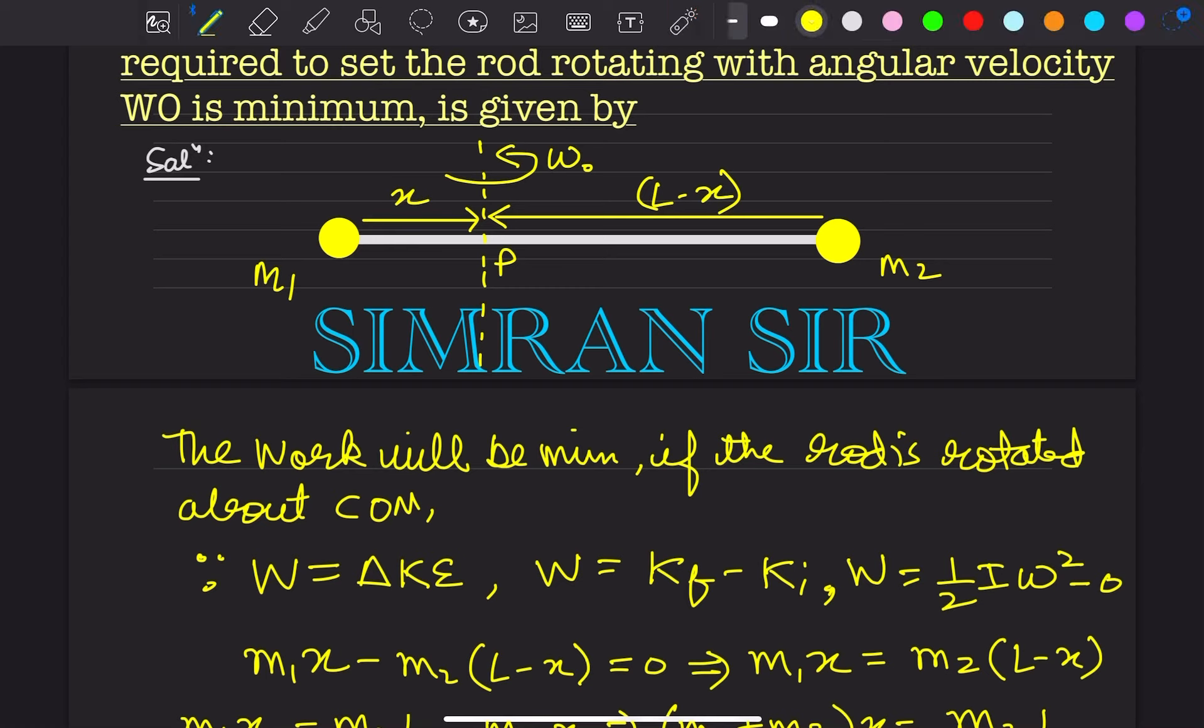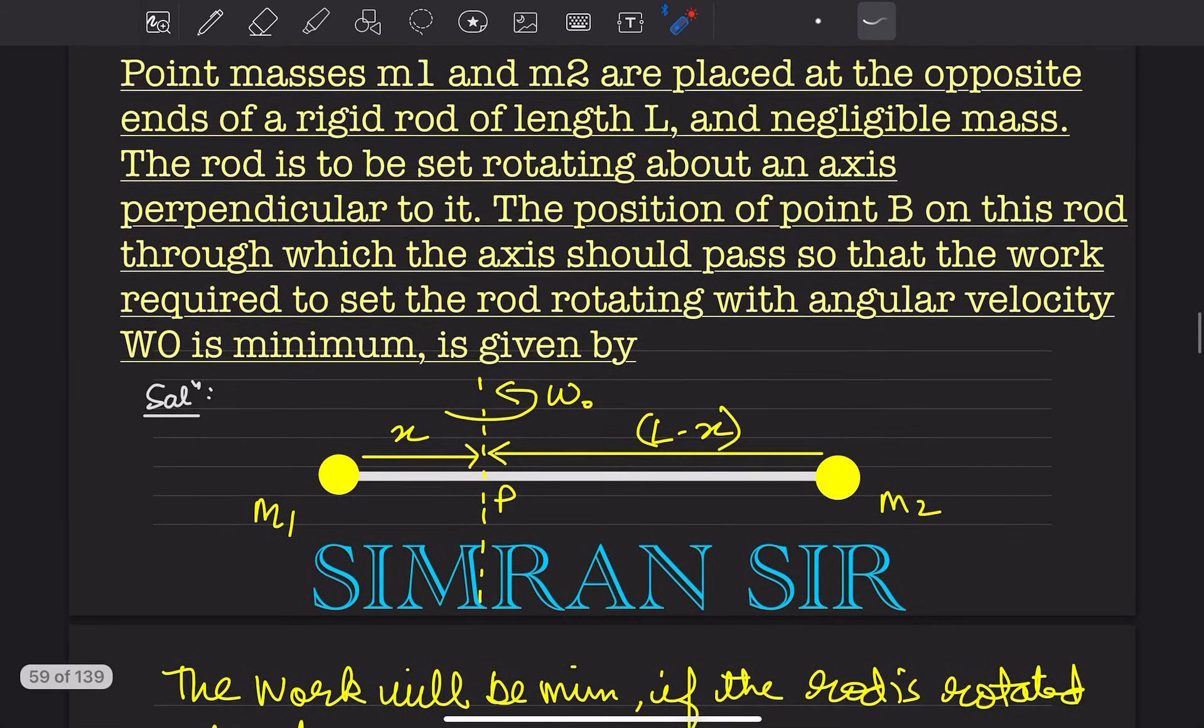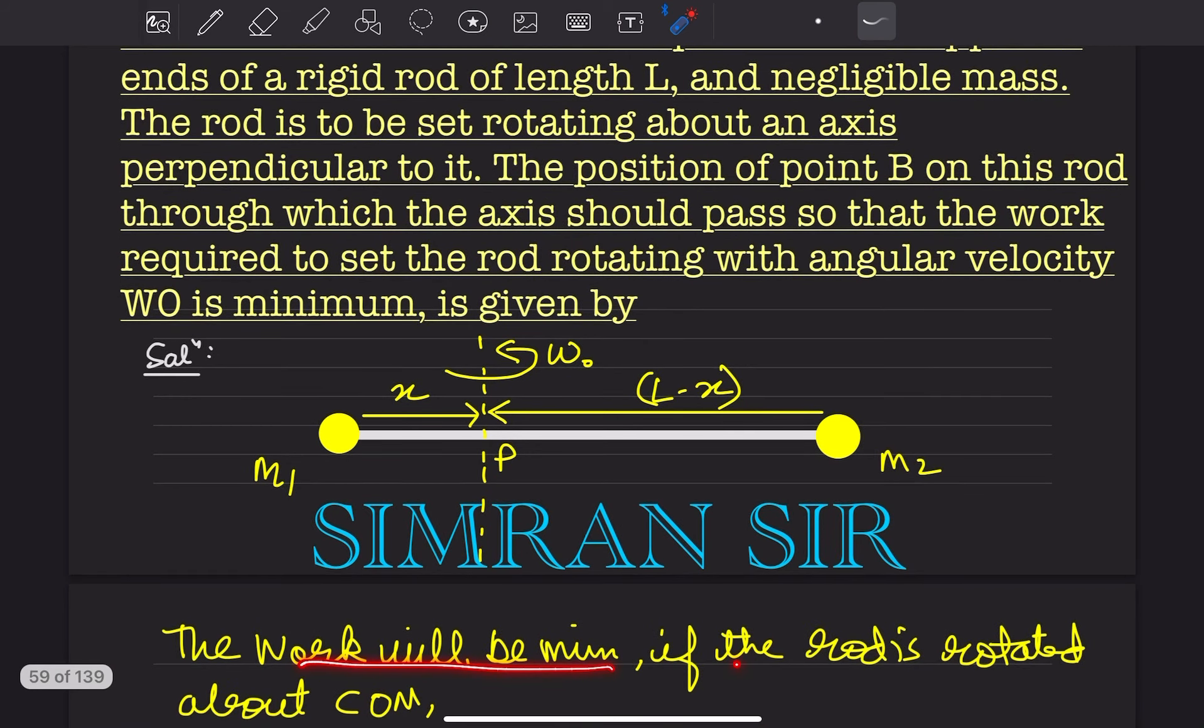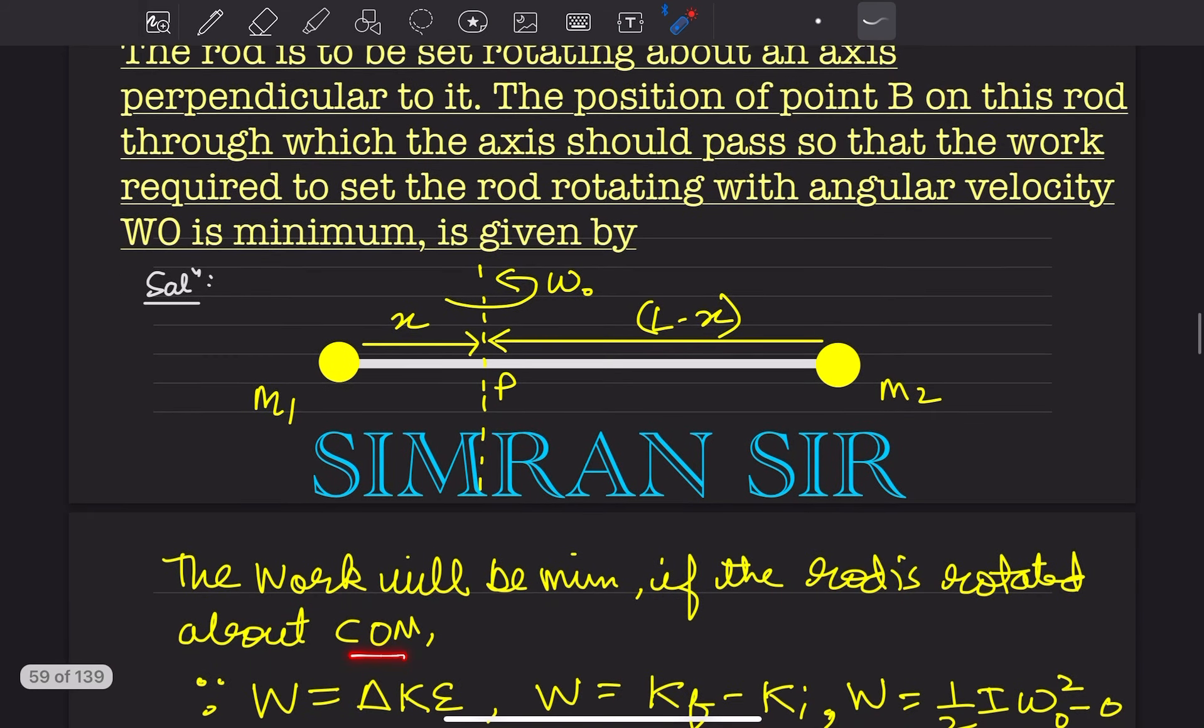If work is minimum, then kinetic energy is minimum, which means moment of inertia is minimum. Moment of inertia is minimum when we take the axis through the center of mass. Work done will be minimum if the rod is rotated about the center of mass.